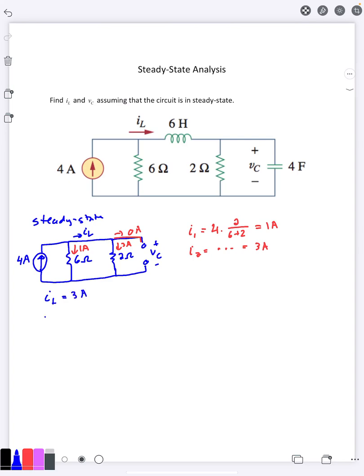On the other hand we can also find VC using Ohm's law. VC is in parallel with the 2 ohm resistor. The 2 ohm resistor has 3 amps coming through it, so we get 6 volts there.